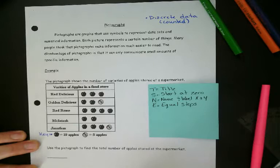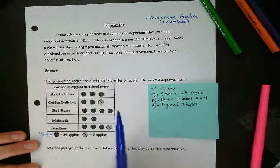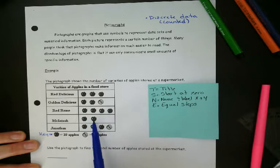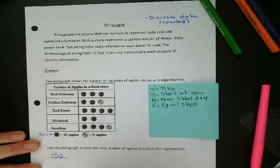So this one is pretty easy. We can use the pictograph to find the total number of apples stored at the supermarket. So you count them all. So 10, 20, 30, 40, 50, 60, 70, 80, 90, 100, 110, 20, 30, 40, and 50. So there's 150 apples in the supermarket.